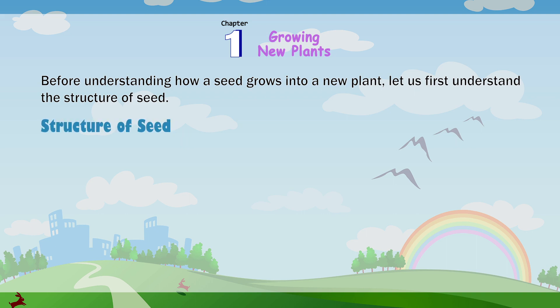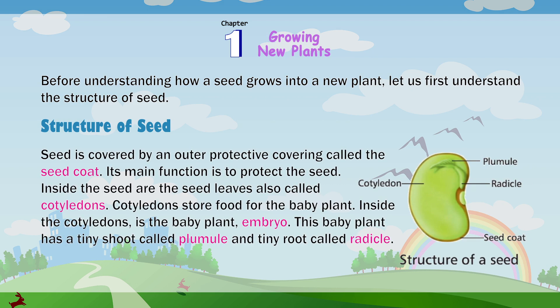Structure of a seed. The seed is covered by an outer protective covering called the seed coat. Its main function is to protect the seed. Inside the seed are the seed leaves, also called cotyledons. Cotyledons store food for the baby plant. Inside the cotyledons is the baby plant, the embryo. This baby plant has a tiny shoot called plumule and a tiny root called radicle. The structure of a seed includes: plumule, radicle, cotyledon, and seed coat.